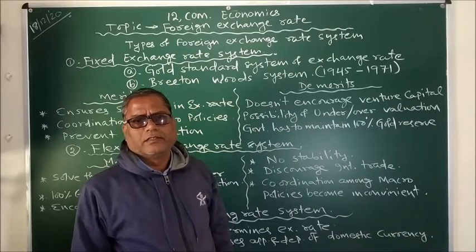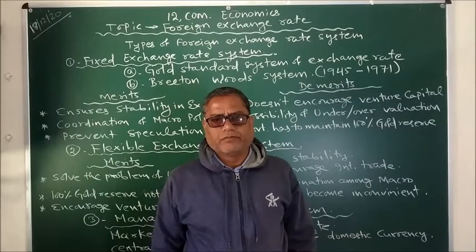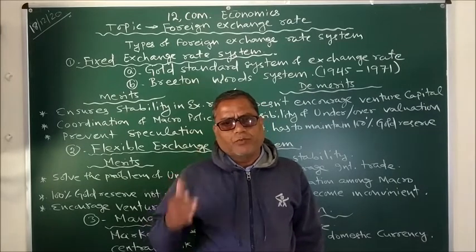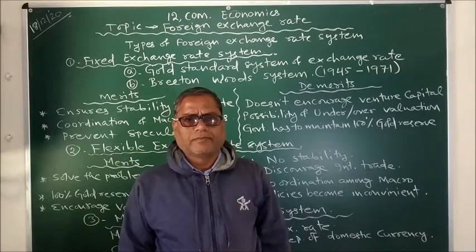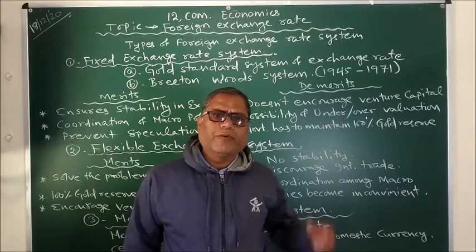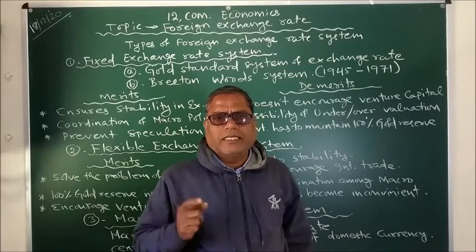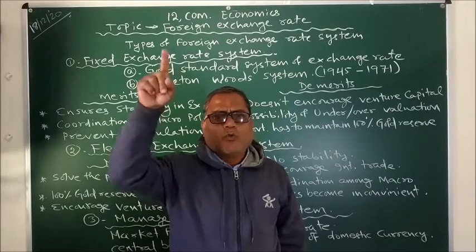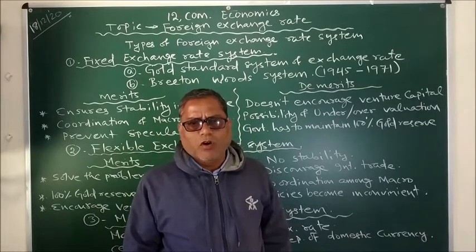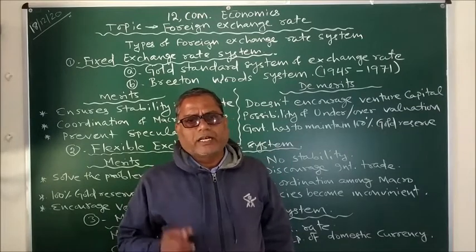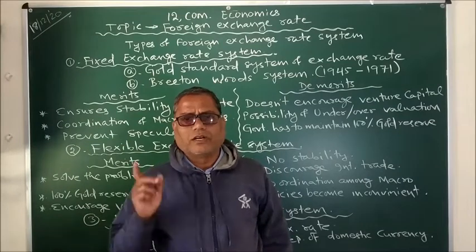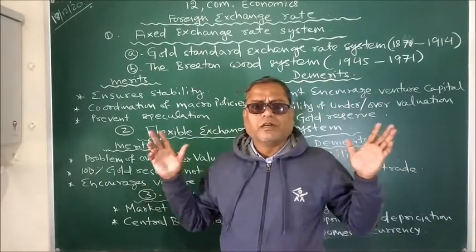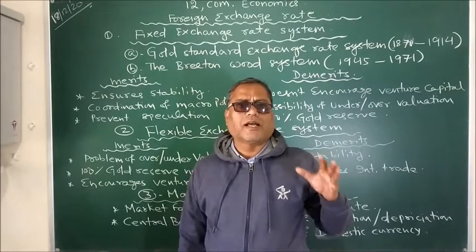Now, what is foreign exchange rate? Foreign exchange rate is the exchange rate between different currencies. For example, suppose we need to pay 50 rupees to get 1 US dollar. So we can say the value of US dollar in terms of Indian rupees is 50, meaning 50 rupees equals 1 dollar, or 1 rupee equals 1/50th of a dollar. The value of 1 rupee in terms of dollar is the 50th part of a dollar. That is foreign exchange rate.